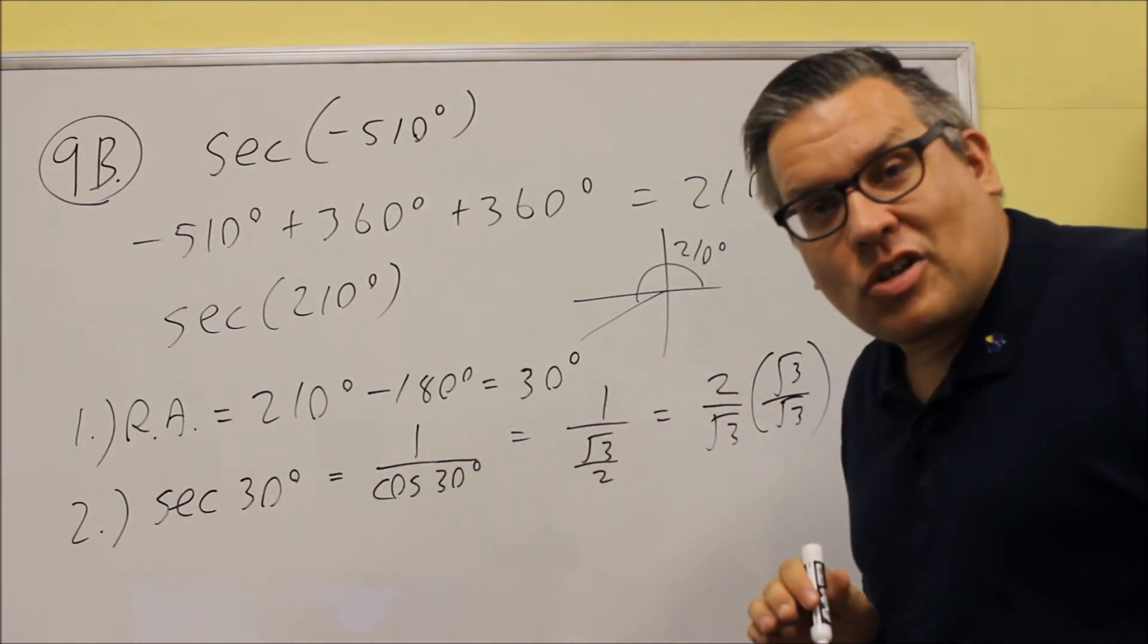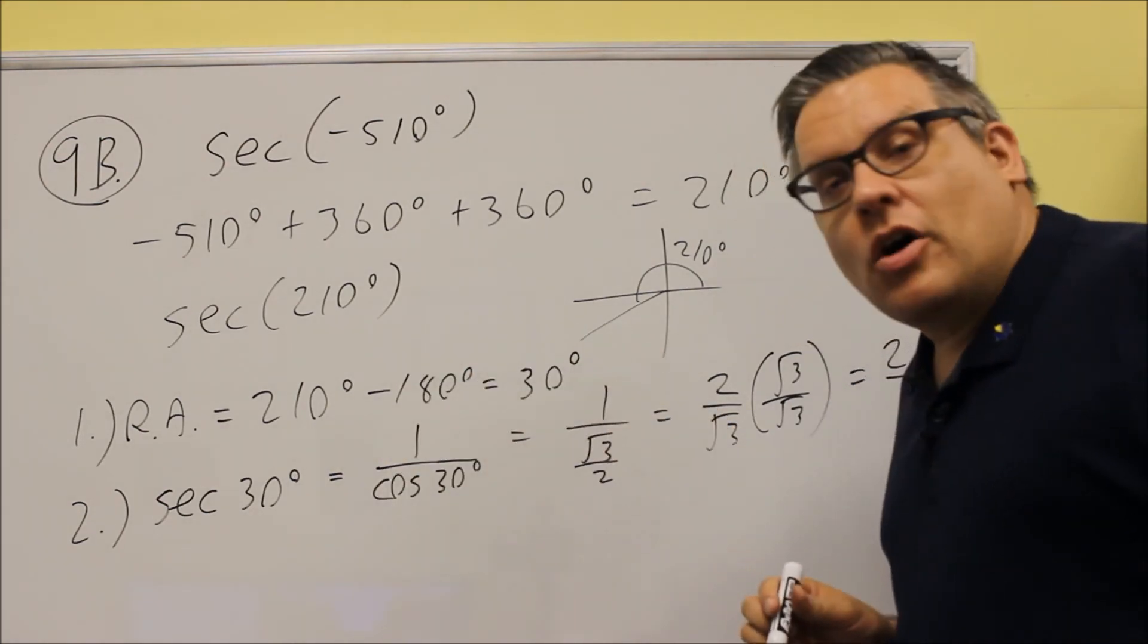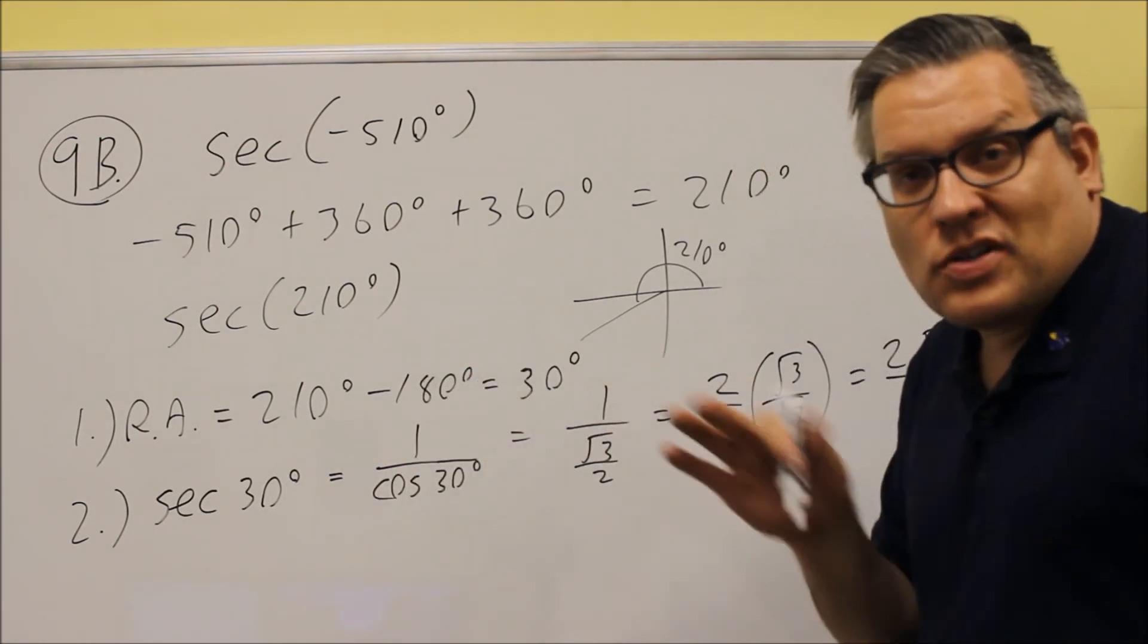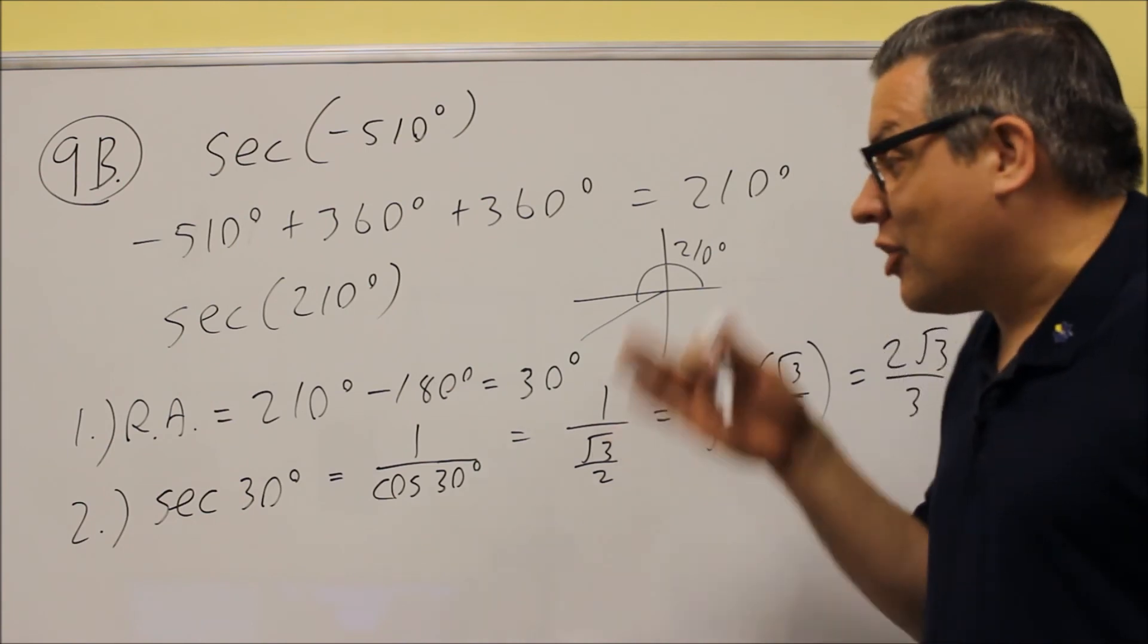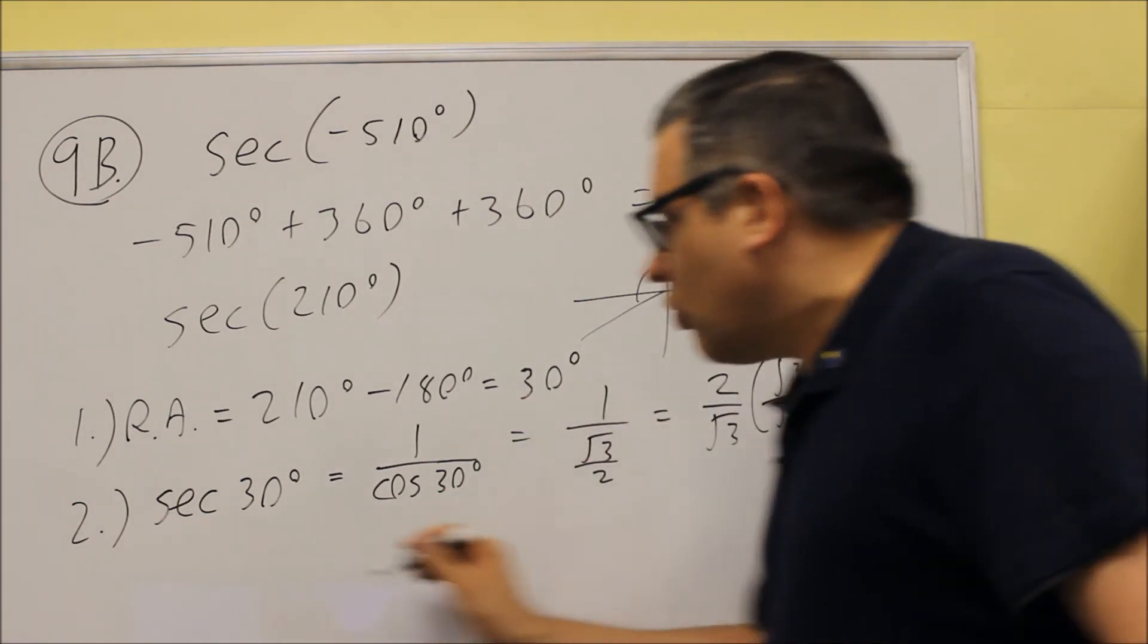But also, secant is going to be negative too because cosine is the reciprocal of the secant, which means they both have the same sign. So if cosine is negative, then secant is also going to be negative. So for step 3, if we want to find the exact value for secant negative 510 degrees, we have to put a negative sign with our value here.